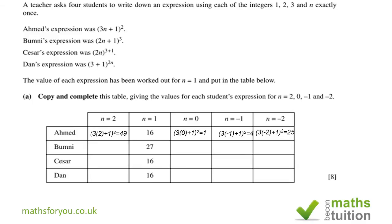For Bumnis: when n=2, 2×2=4, 4+1=5, 5³=125. When n=0, 2×0=0, 0+1=1, 1³=1. When n=−1, 2×(−1)=−2, −2+1=−1, (−1)³=−1, because −1×−1=1 and 1×(−1)=−1. When n=−2, 2×(−2)=−4, −4+1=−3, and (−3)³=−3×−3×−3=−27.